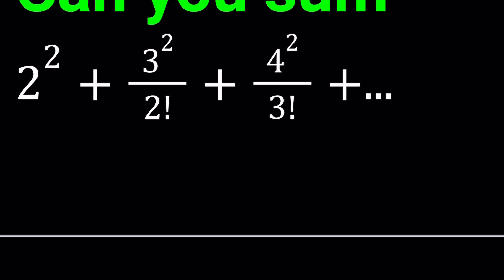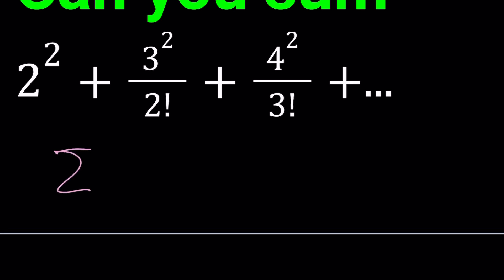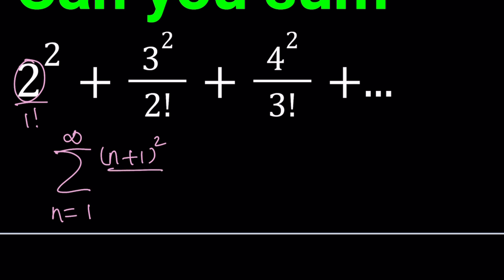How do we express this sum using sigma notation? We start with n equals 1 going to infinity. The general term begins with 2 squared divided by 1 factorial, so the numerator is n plus 1 squared and the denominator is n factorial. When you substitute n equals 1, 2, 3, you recover the successive terms of the series.